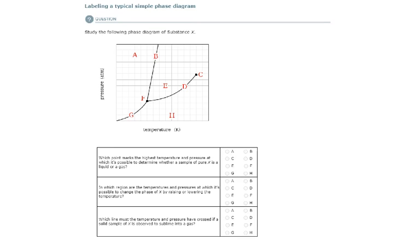All right, so we're going to label a simple phase diagram here. Now, we should know what these sections are, right? It's solid, liquid, and gas.